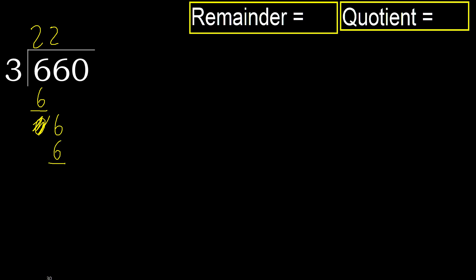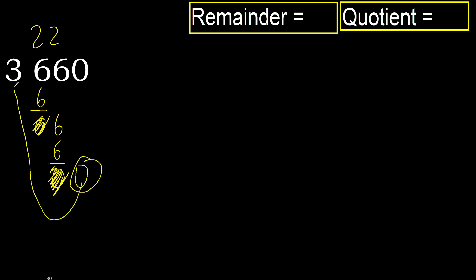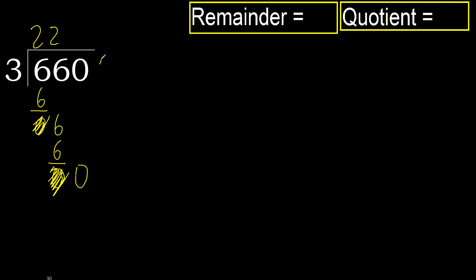6 minus 6 is 0. Next, eliminate 0 on this side — 0. But 0 is less, therefore next. There is no number, therefore finish it.